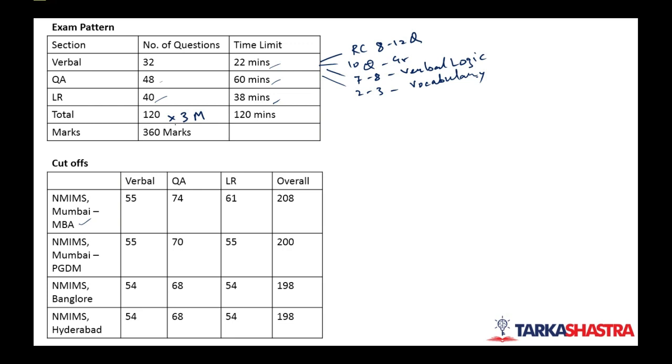Quant section is very easy. 20 questions for DI and 28 questions for quant and major focus on quant is on topics of arithmetic. LR they do ask some puzzles but major focus is on topics like input output, blood relation, direction sense, coding decoding. Overall QA and LR become very easy but verbal is the toughest one.